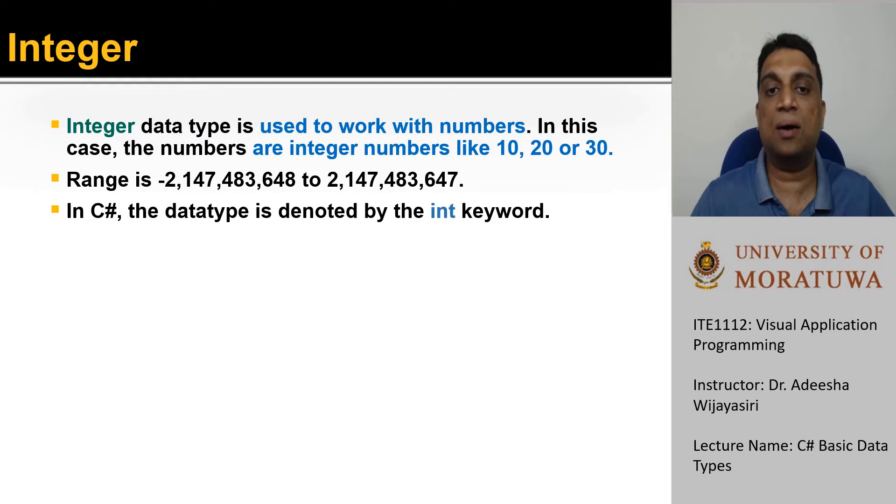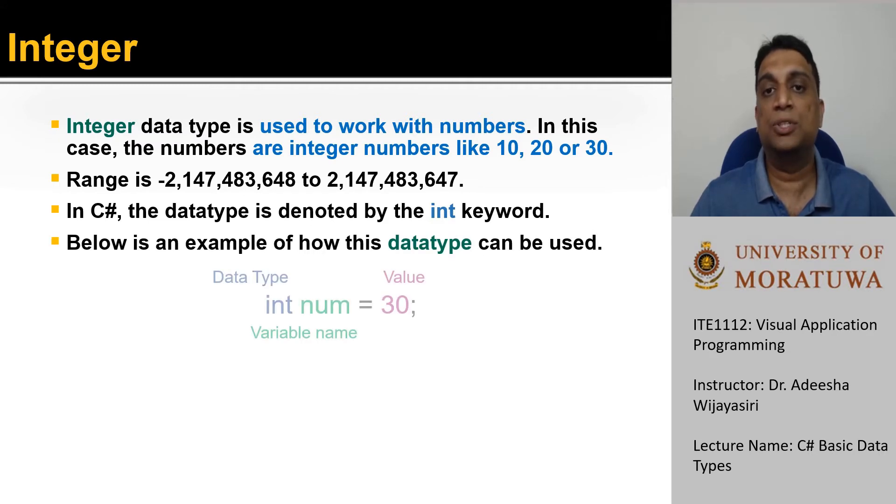In C sharp, the integer type is denoted by the keyword int. This example statement shows how to use the int data type in a program. Here int keyword is the data type. Then you need to give the name of the variable.